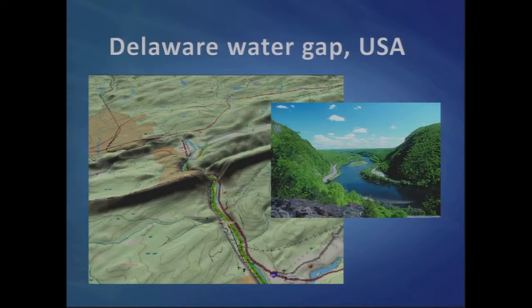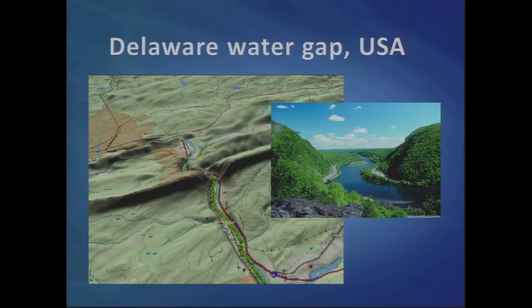Clearly rivers do not flow uphill. But how could it have done so then? The Delaware Water Gap is probably the most famous example — you can clearly see in the schematic at the left-hand side a topographical 3D view of the map, and also the actual picture of the Delaware Water Gap. It's a lovely little feature.